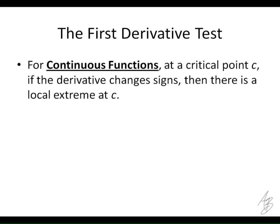So, the first derivative test says this, and this is kind of a general form of it. It's a little bit more specific about whether it's a maximum or minimum, but for a continuous function at a critical point c — that's x equals c — if the derivative changes signs, if it changes from positive to negative, or if it changes from negative to positive, then that critical point c is going to be a local extreme. It's either going to be a local minimum or a local maximum.